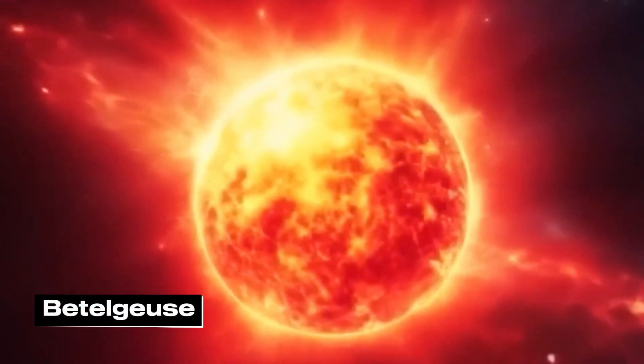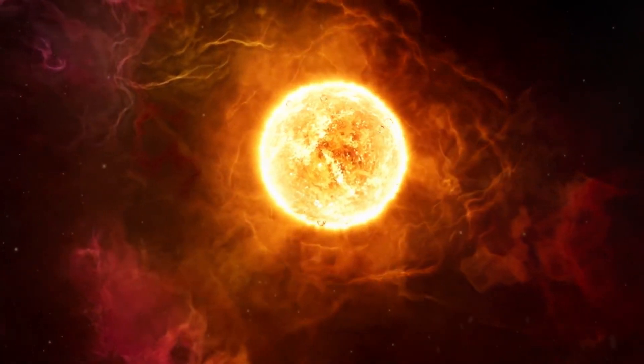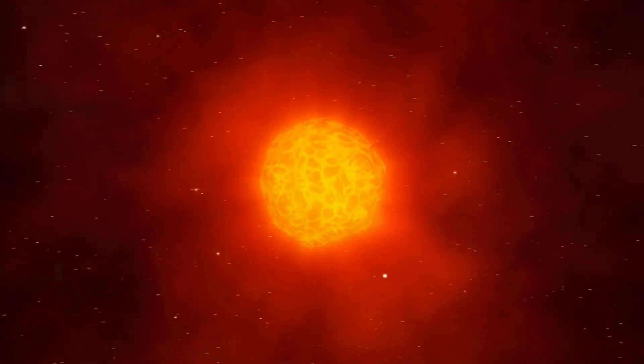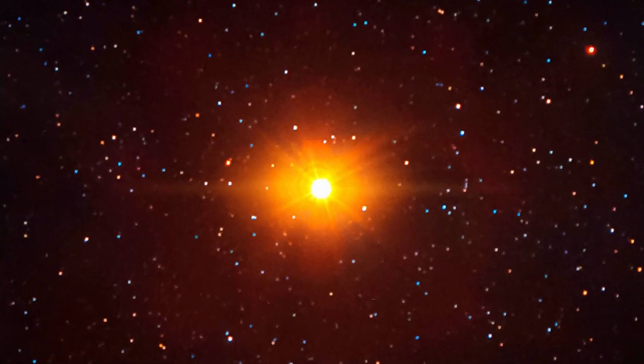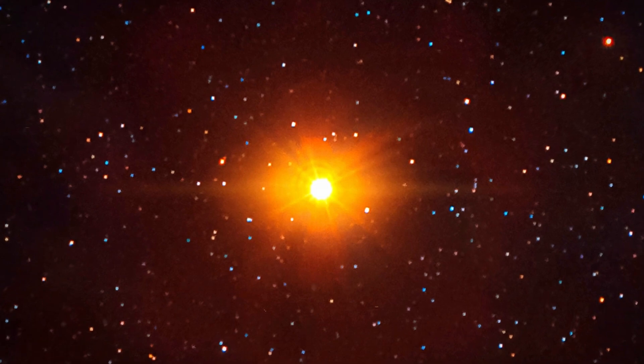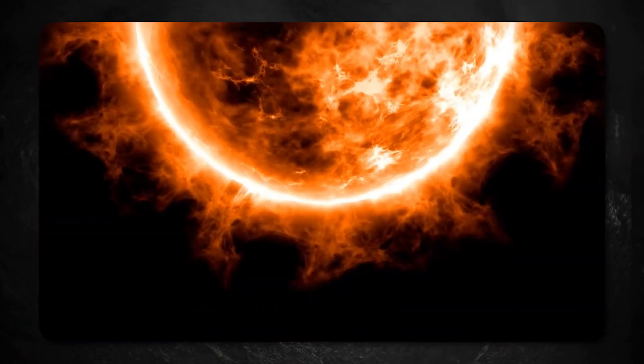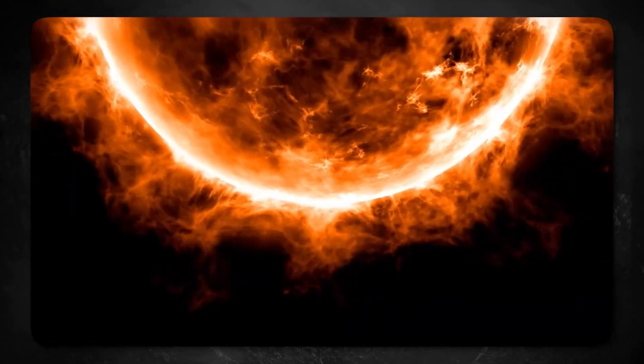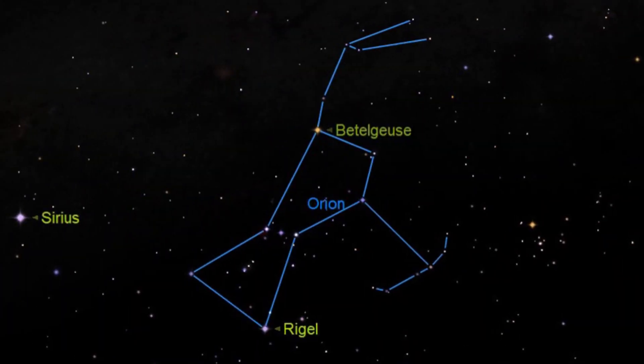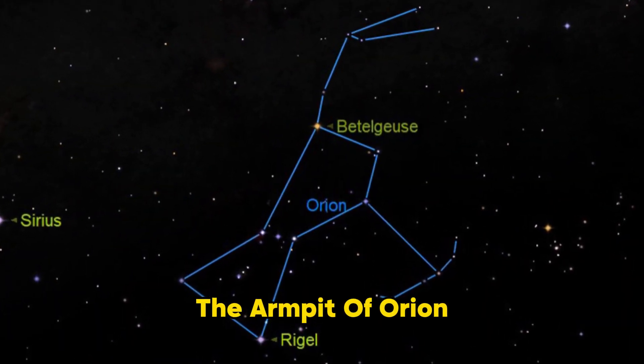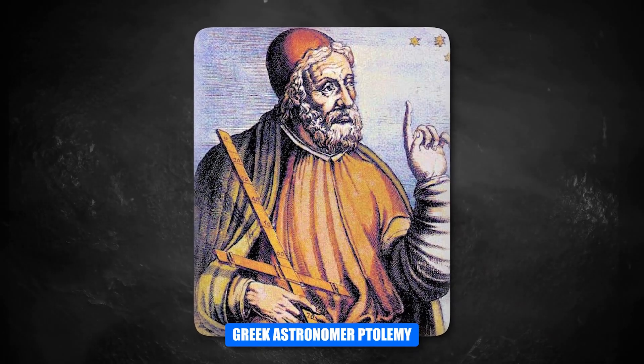Betelgeuse is an interesting star because its light and size are always changing. Think of Betelgeuse as a huge star that stands out without trying too hard. It weighs about 20 times as much as our sun. Betelgeuse has been a bright star in the sky for a long time. It's called the armpit of Orion in Arabic, which is what the Greek astronomer Ptolemy called it.